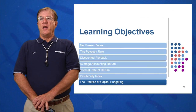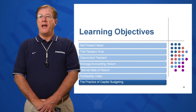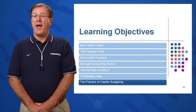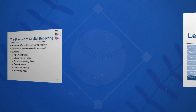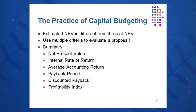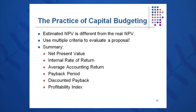The seventh and final learning objective of session nine is the practice of capital budgeting. Which of these methods are used heavily? As I mentioned, the ones most heavily used in practice in industry are NPV, definitely ranked number one, IRR, and payback.